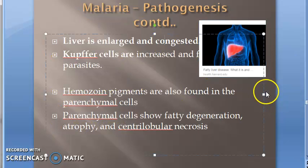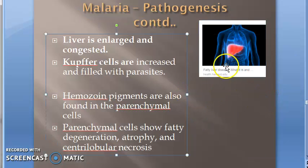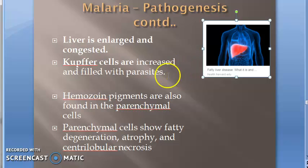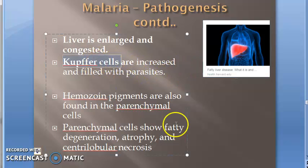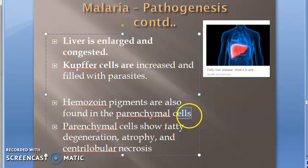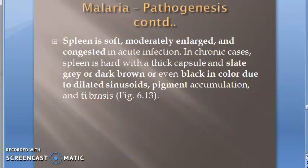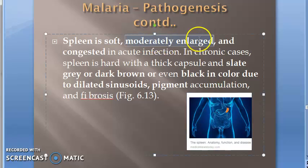In the liver, it is enlarged and congested. Kupffer cells — the macrophage cells — are increased and filled with parasites. The parenchymal cells show fatty degeneration, atrophy, and centrilobular necrosis. Moving on to the spleen, it is also enlarged.